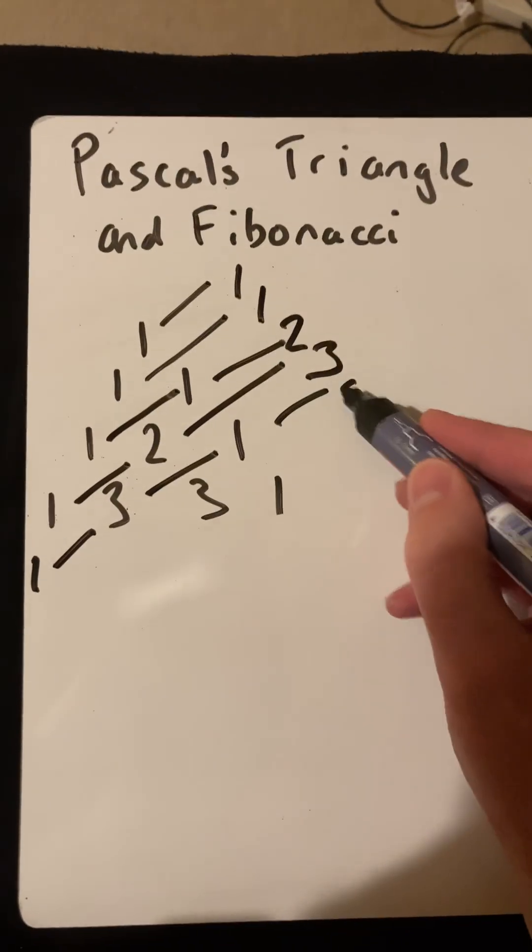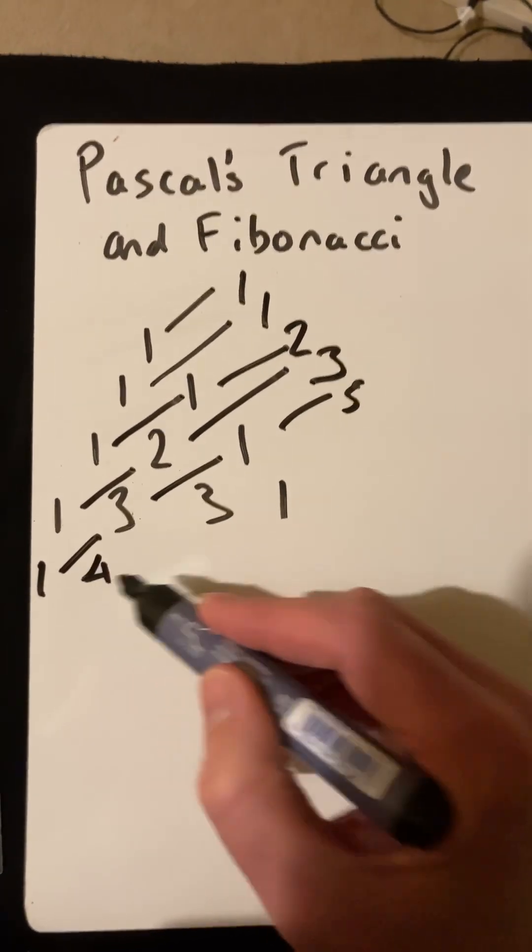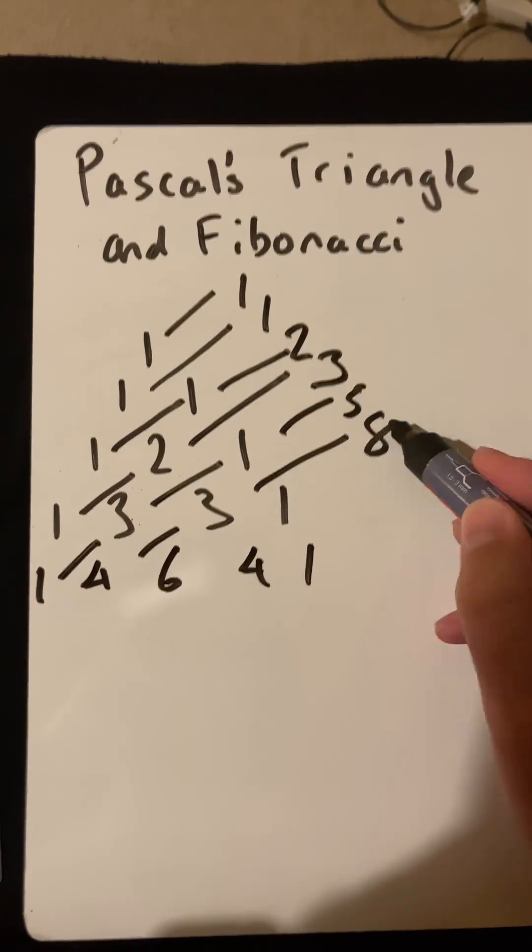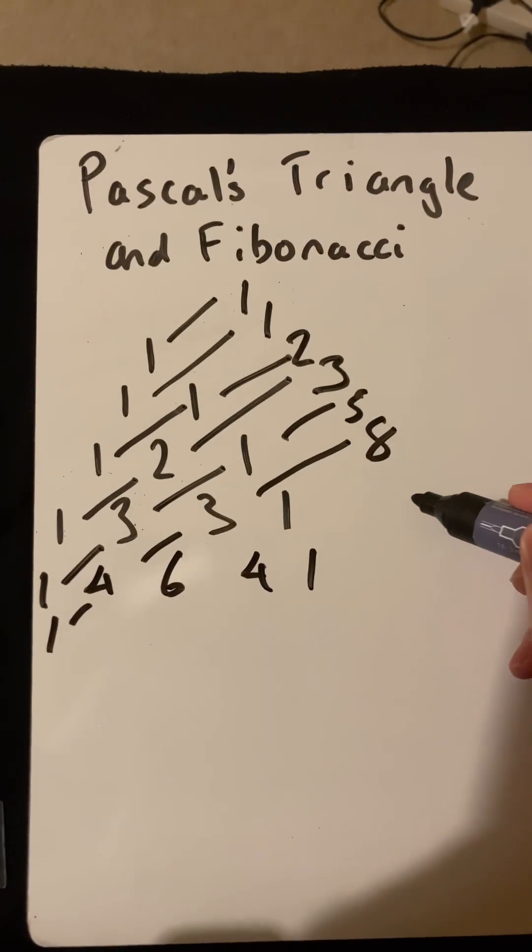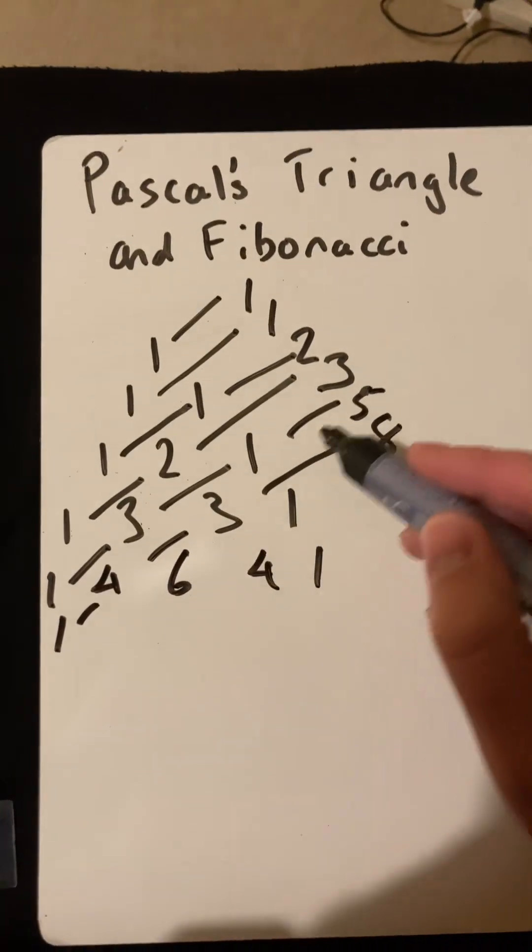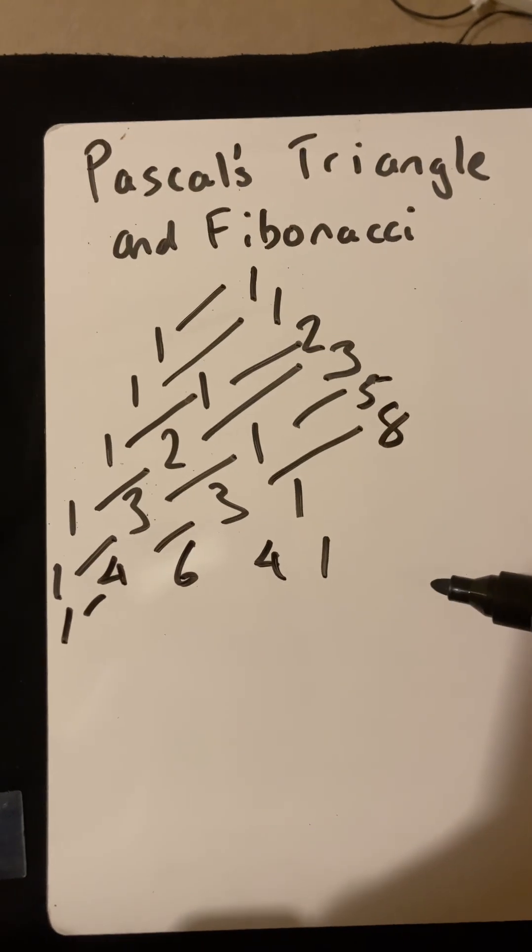There'd be a 1 there, and that would have been a 4, 6, a 4 and a 1, and you would continue, because there would have been a 1 there, to get the growing Fibonacci sequence by taking these parallel, almost diagonal lines in Pascal's Triangle.